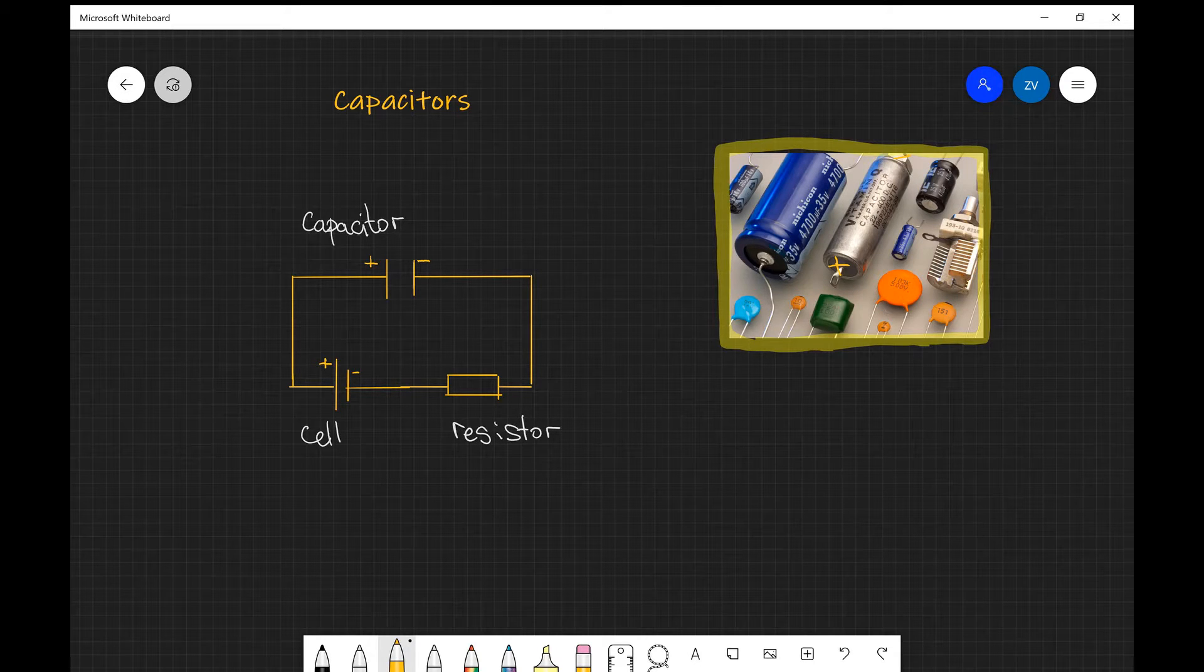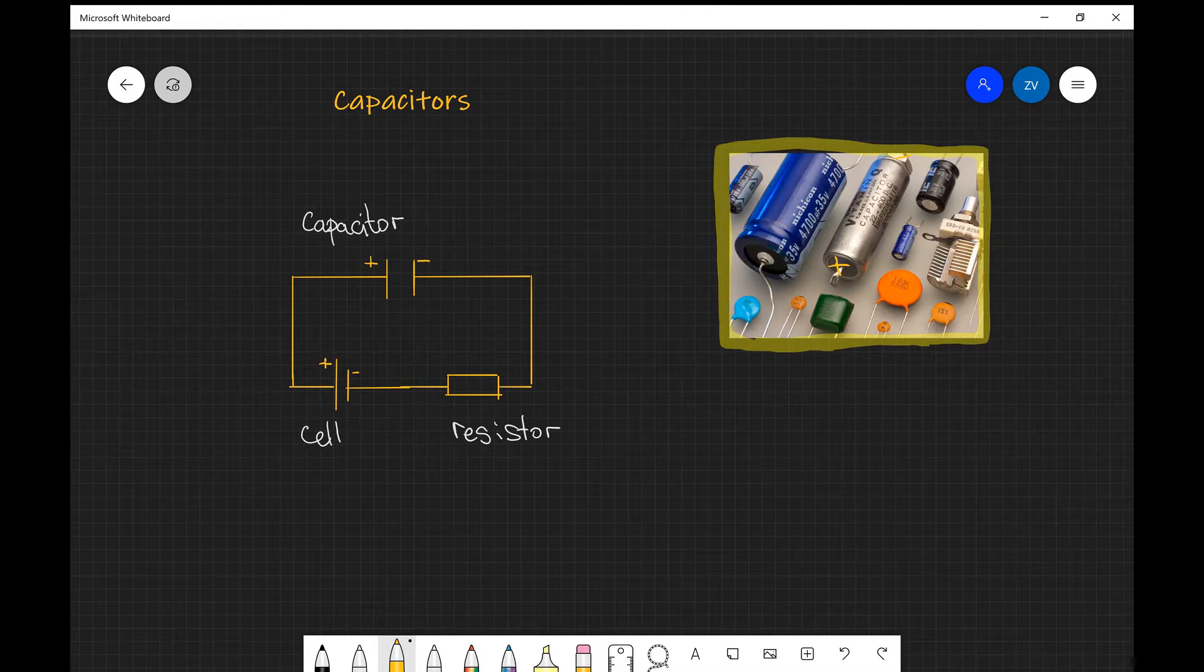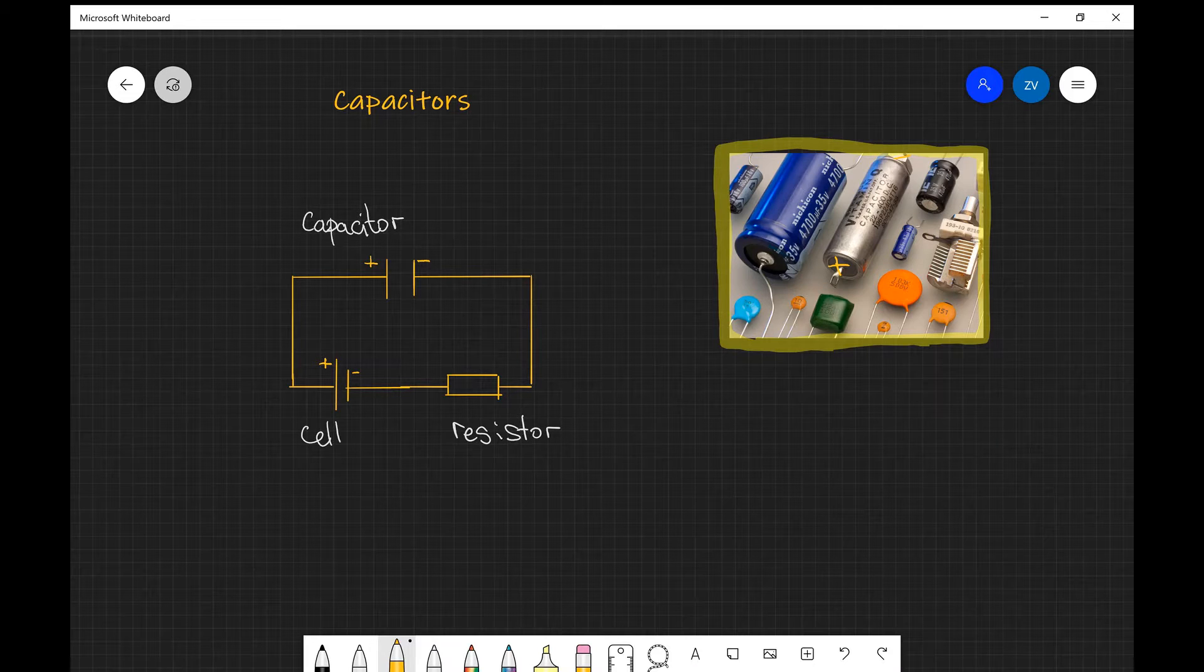A lot of the early capacitors were parallel plate capacitors. You can see that this has changed in recent years, and a lot of modern in-use capacitors are cylindrical. Many of the ones we'll be dealing with in the lab are actually of cylindrical shape.